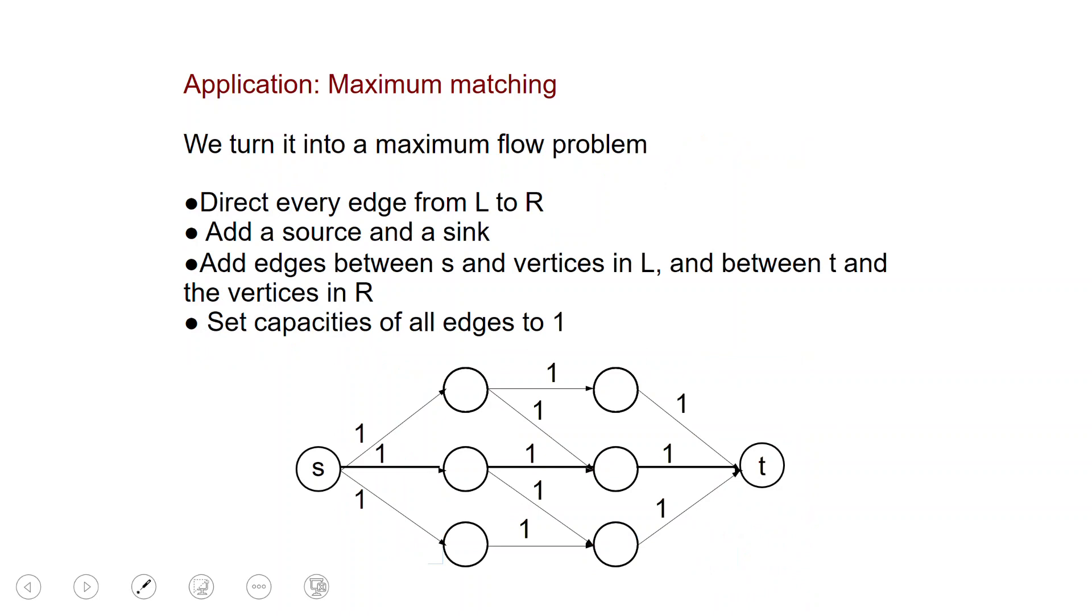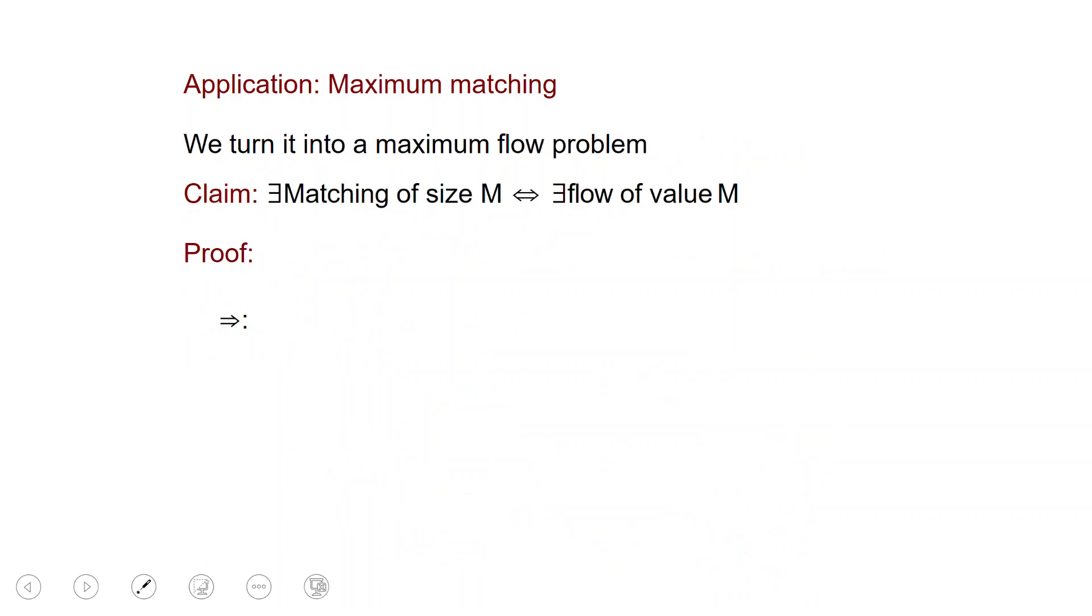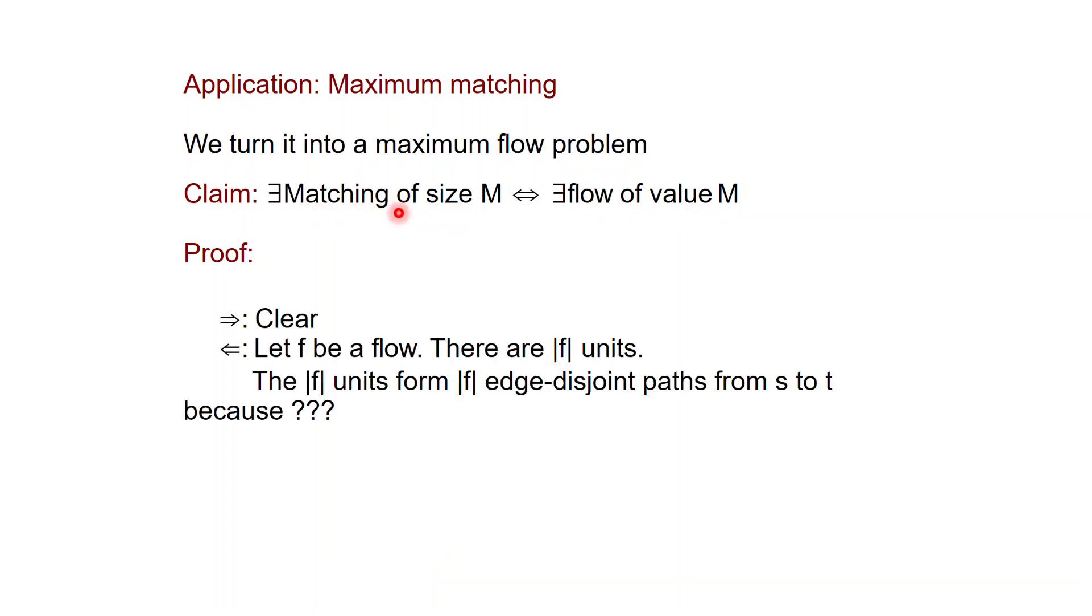The critical claim that we make is that you have a matching of size M if and only if you can find the flow of value M. So the largest the flow, the largest the matching and so on. One direction of this claim is clear. If you have a matching, then you can find a flow with the corresponding value, because you can just push the flow along the matching. What's interesting is that even in the other direction the claim holds.